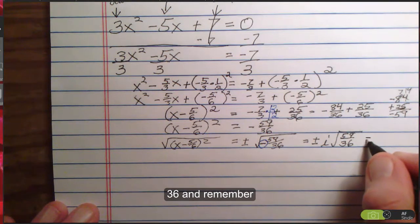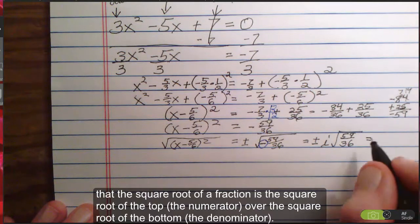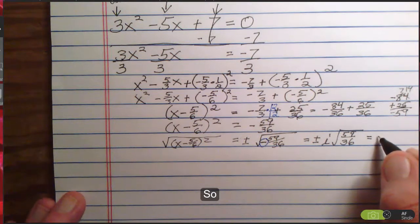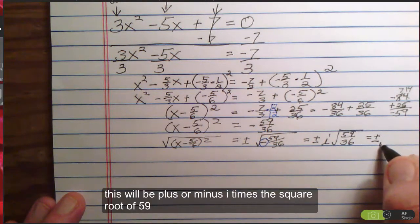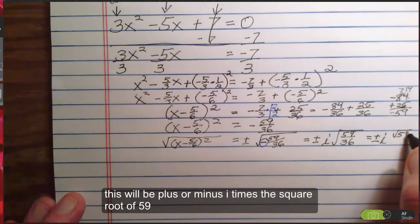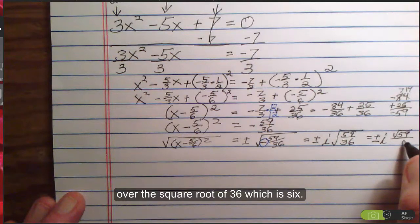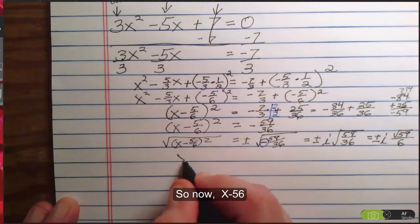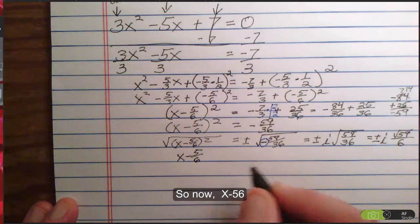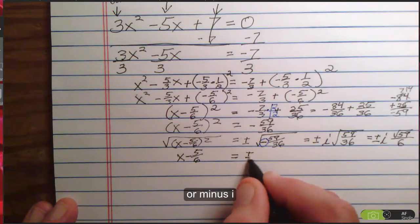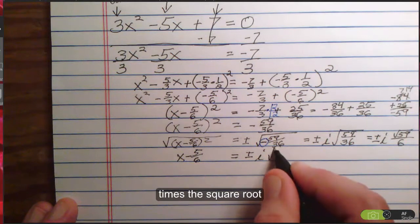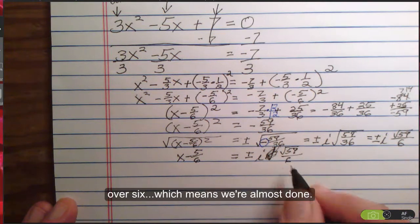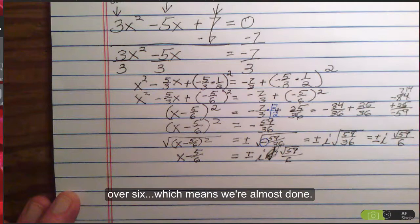And, remember, that the square root of a fraction is the square root of the top, the numerator, over the square root of the bottom, the denominator. So, this will be plus or minus i times the square root of 59 over the square root of 36, which is 6. So, now, x - 5/6 equals plus or minus i times the square root of 59/6, which means we're almost done.